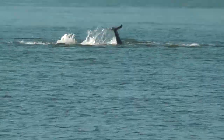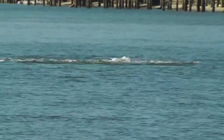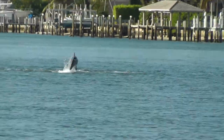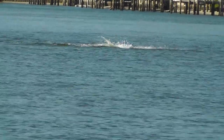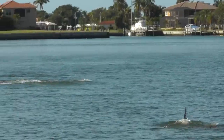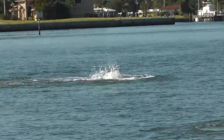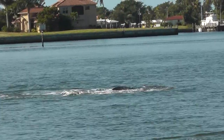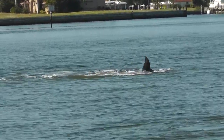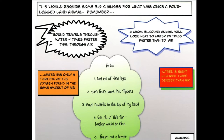The ancestors of modern whales and dolphins began to evolve adaptations that would allow them to return to the sea. This would require some big changes for what was once a four-legged land animal.